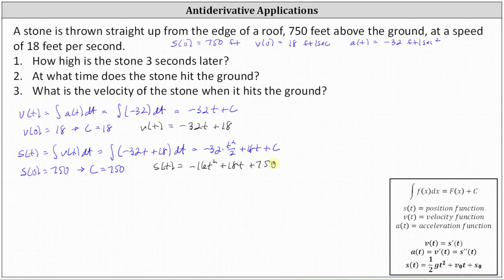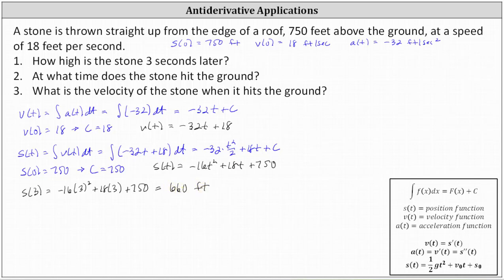Now we can answer question number one: how high is the stone three seconds later? To answer this, we determine s of three, which equals negative 16 times three squared plus 18 times three plus 750, which equals 660 feet. The stone is 660 feet high after three seconds.